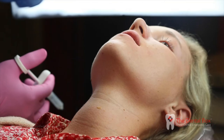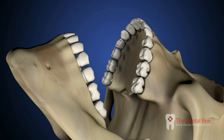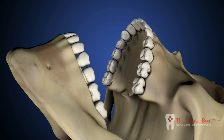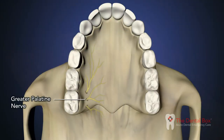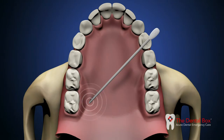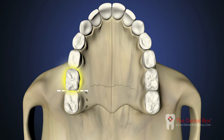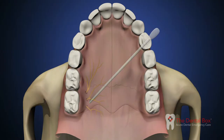Position patient supine if possible. Have the patient open wide and extend their neck with their chin towards the ceiling. Place cotton swab and apply moderate pressure at the greater palatine foramen, which is located just distal of the second maxillary molar where the teeth transition to the roof of the palate.